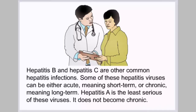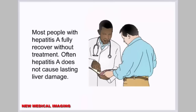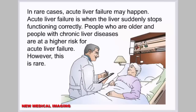Some hepatitis viruses can be either acute, meaning short-term, or chronic, meaning long-term. Hepatitis A is the least serious of these viruses and does not become chronic. Most people with hepatitis A fully recover without treatment, and it often does not cause lasting liver damage. In rare cases, acute liver failure may happen — when the liver suddenly stops functioning correctly. People who are older and those with chronic liver diseases are at higher risk, but this is rare.